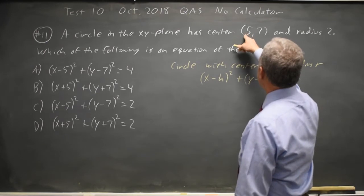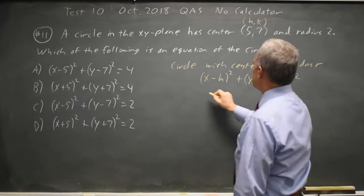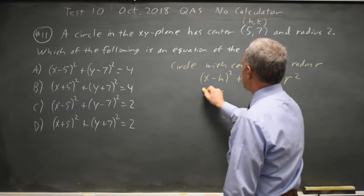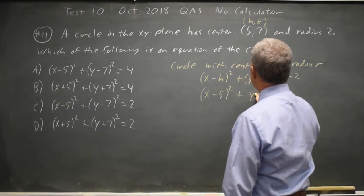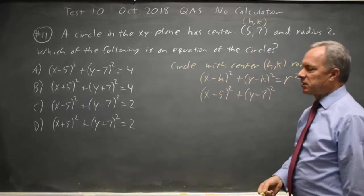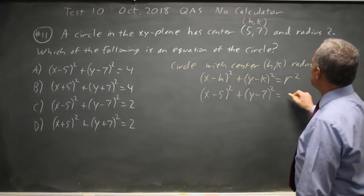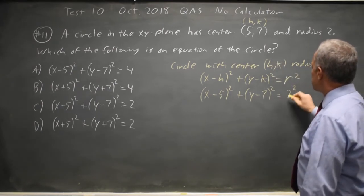Here we have the center (h, k) is (5, 7), so it's (x - 5)² and (y - 7)². If I've written this, I'm not going to forget the negative. It equals r squared. r is 2, so r squared is 4.